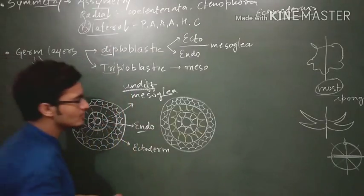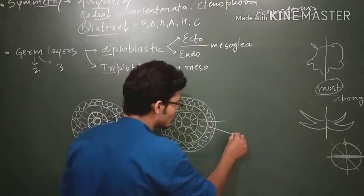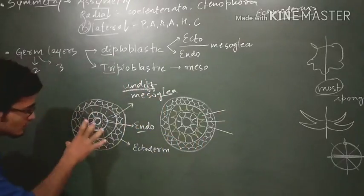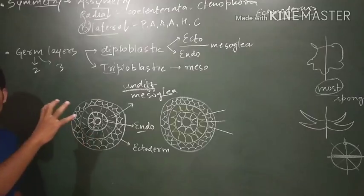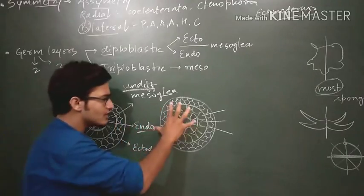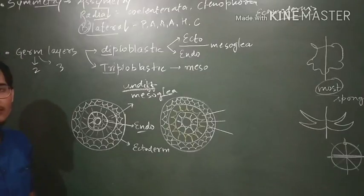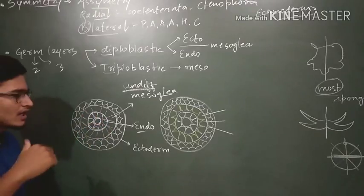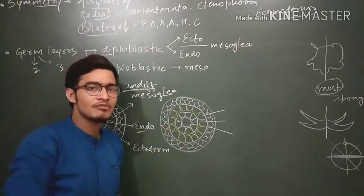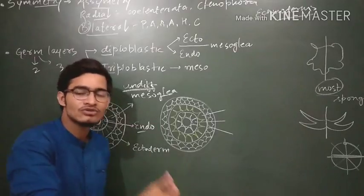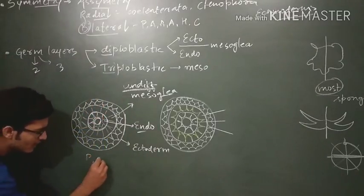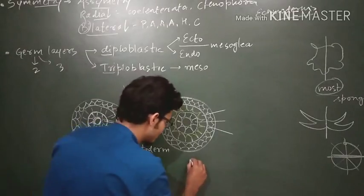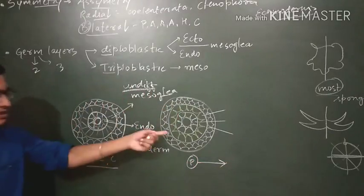In the next diagram, there is endoderm, there is ectoderm, and there is a yellowish layer shown — that is the mesoderm. So the first diagram represents diploblastic organisms, and the second diagram represents triploblastic organisms. All organs in lower animals are derived from endoderm and ectoderm, while all organs in higher animals are derived from endoderm, ectoderm, and mesoderm as well. The examples of diploblastic organisms are Porifera, Cnidaria, and Ctenophora — the lower organisms. From Platyhelminthes onwards, all the remaining ones are triploblastic.